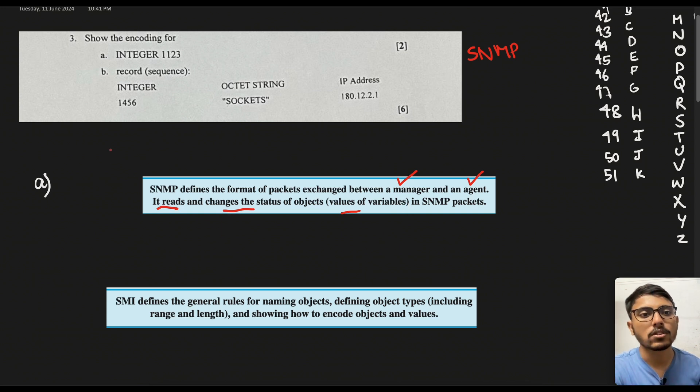Okay so what we are given here is basically show the encoding for integer 1123 and part B in the record which is a sequence of integer, octet string, and IP addresses. So the encoding for both of these in the SNMP architecture has to be displayed here.